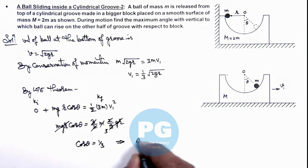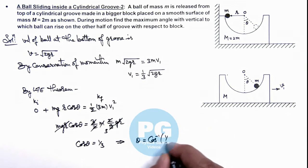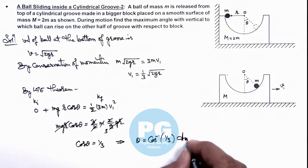This implies the maximum value of θ up to which the ball can go is cos⁻¹(1/3). That is the result of this problem.